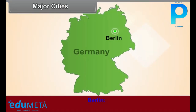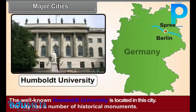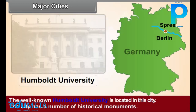Major Cities – Berlin. This city is situated along the banks of the river Spree. It is the capital of the country. The well-known Hamburg University is located in this city. The city has a number of historical monuments.